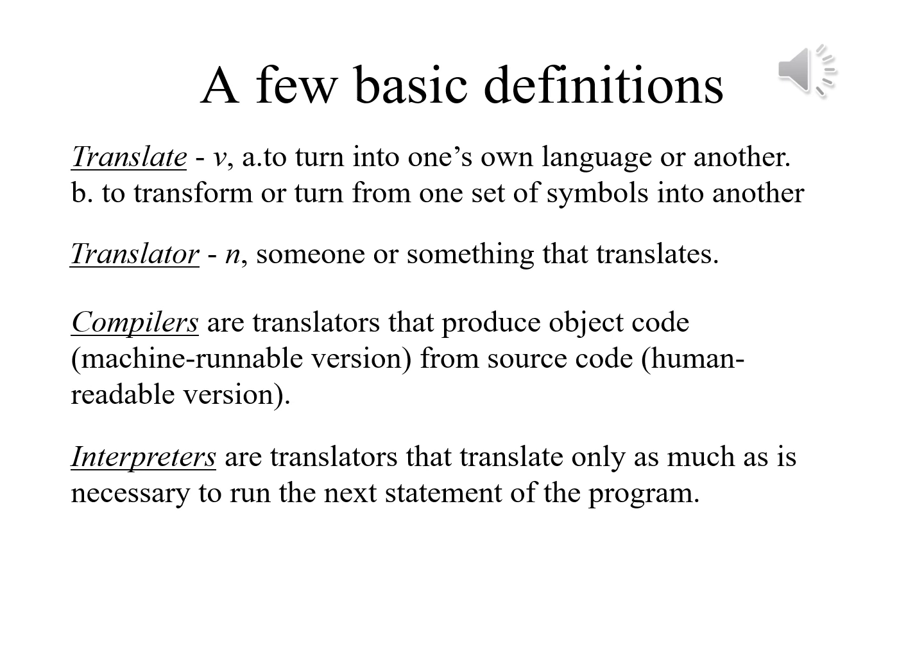Compilers are translators that produce object code — a machine-runnable version of the program — based on source code, the human-readable version from which it is derived. Interpreters are translators that translate only as much as is necessary to run the next statement of the program.